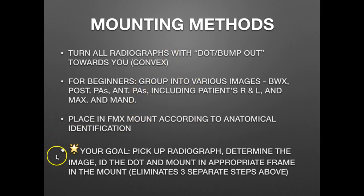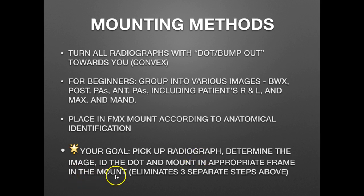These are the steps for a beginner. Keep in mind that once you learn this skill and are working with film, you should be able to mount an FMX in less than five minutes — your goal is actually two minutes. Rather than working through all these step-by-step procedures, your goal is to pick up one radiograph at a time from the pile, determine what the image is, make sure you have the bump or ID dot towards you, and place it in the appropriate frame. This is your goal in learning how to mount quickly and accurately.